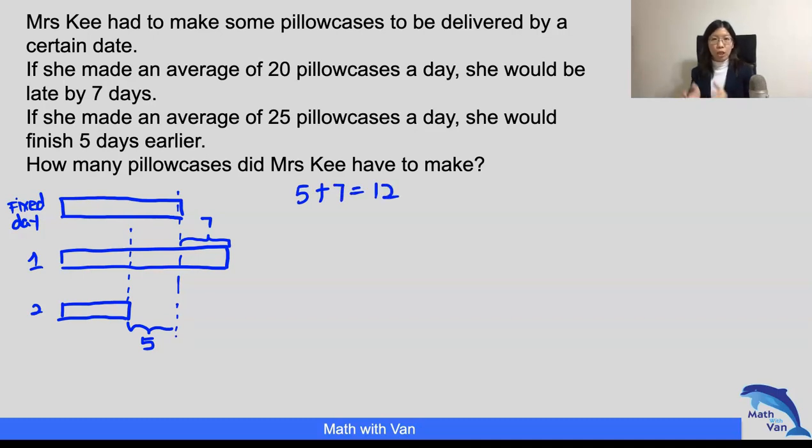So it means to say that she took 12 more days in scenario one than scenario two. So how many pillowcases did she make during those days? So 12 days, 12 times 20 in scenario one, that is 240. So remember that this 240 extra pillowcases were in fact not extra because she made the same number of pillowcases. But she was able to complete making the same number so fast in scenario two because she was faster.